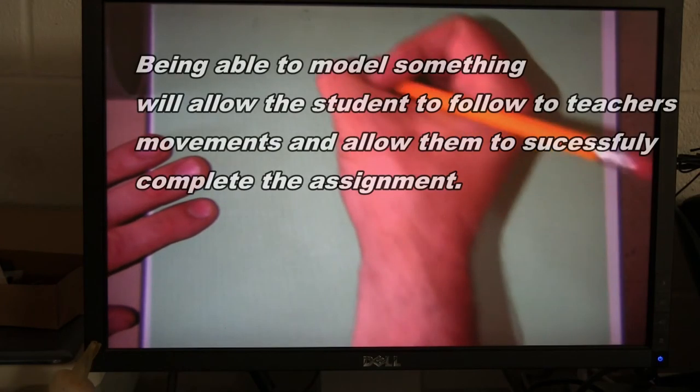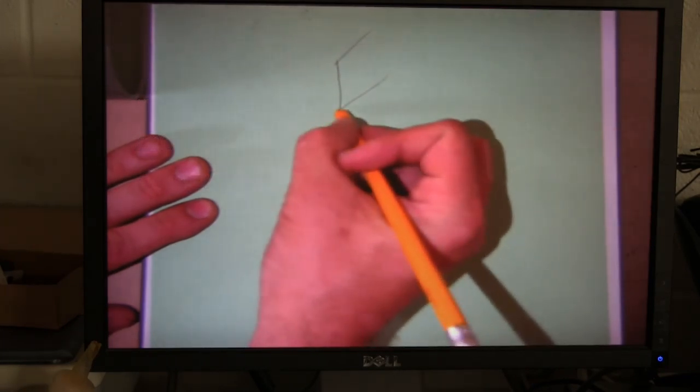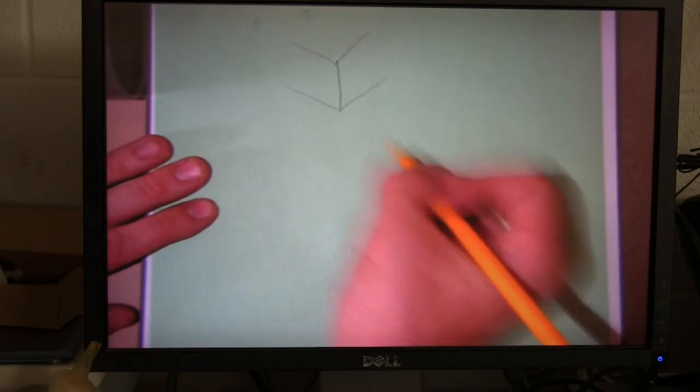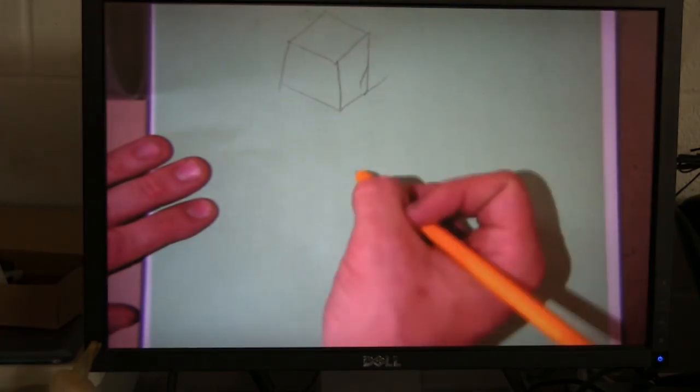The document camera can also be used as a modeling tool for the teacher or instructor to show students different drawings or procedures of an assignment. For example, I am going to draw an isometric sketch for a drawing class. Students can mimic the teacher's motions by watching what I am doing and completing the final drawing.